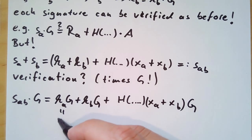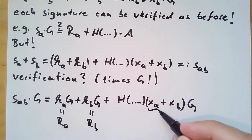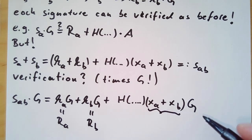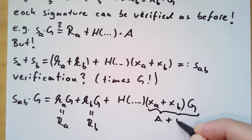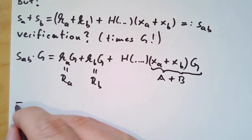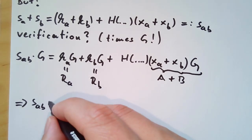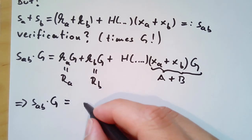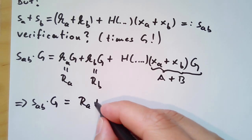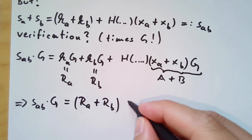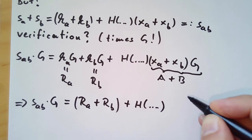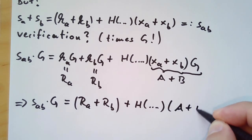KA times G is RA and KB times G is RB like we had in our former partial signatures. Now XA plus XB is the sum of private keys and would be the private key of the combined address. But multiplied with G it is actually the sum of the public keys.